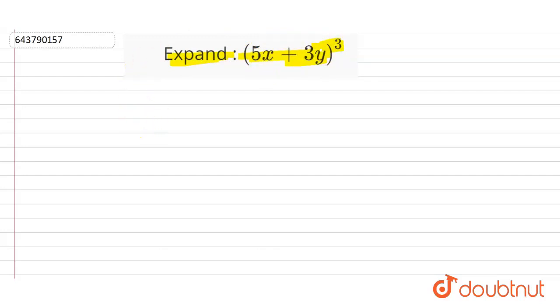So let's solve it. We know that identity (a + b)³ is equal to a³ + b³ + 3ab(a + b). Now with respect to this question here a is equal to 5x and b is equal to 3y.